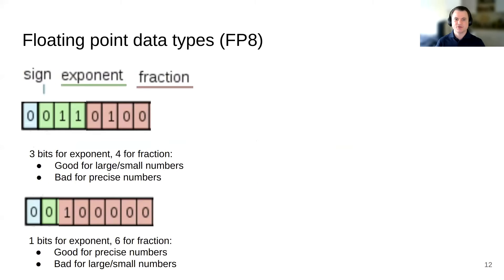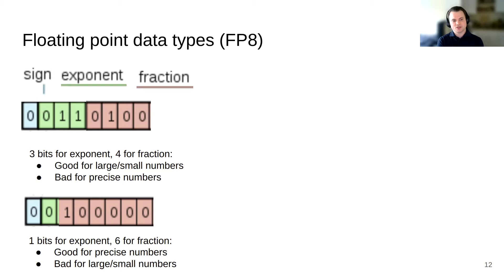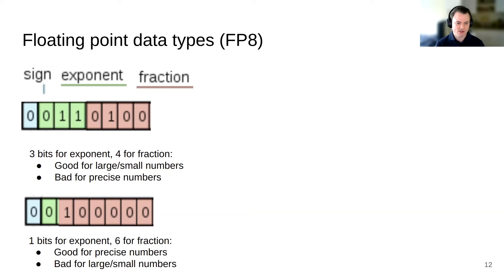This is an important consideration: different data types have different properties that give different advantages or disadvantages. It's always a trade-off. For 8-bit floating point data types, you always have 1 bit for the sign, then exponents — which are 2 to the power of the integer value of the exponent — and a fraction. With more exponent bits, you can represent smaller and larger numbers, but each number has less precision. With only one exponent bit, you have better precision but cannot represent very small and very large numbers.